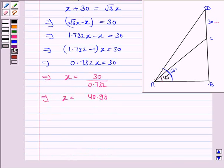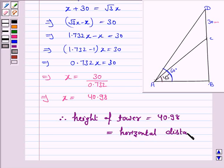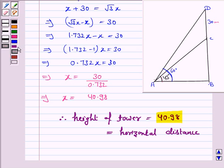Therefore the height of the tower is equal to 40.98 meters, which is also equal to the horizontal distance, because we have proved that x is equal to y. So 40.98 meters is the answer. This completes the question and the session. Bye for now, take care, have a good day.